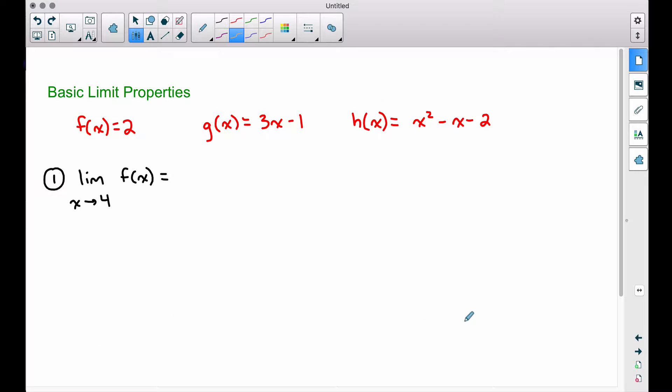Problem number one: the limit of f of x as x approaches four is equal to what? Well f of x is equal to two. So really all this is saying is the limit as x approaches four of this constant function. Here's a rule about constants: the limit of a constant is the constant, regardless of what x is approaching. So this answer is going to be two.